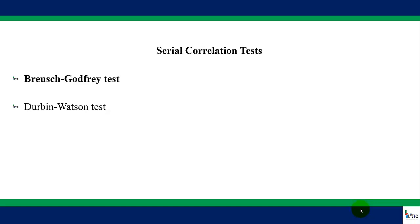We have two major serial correlation tests. The first is the Breusch-Godfrey test and the second is the Durbin-Watson test. But in this video, we are going to look at the Breusch-Godfrey test. The Durbin-Watson test always comes out with the results of OLS.